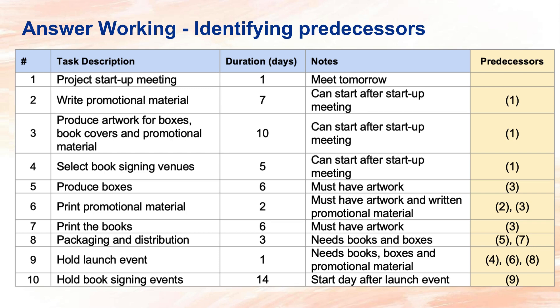The nodes basically explain what the predecessors are. In deciding predecessors for task 9, that is hold launch event, we need to use common sense to know that selecting the signing venue, which is task 4, is a predecessor, although the notes don't say so and only specify that tasks 6 and 8 are needed for the launch event. Just like we attempted questions in the previous video lessons, let's start drawing the CPA nodes and activities first without any concern for the durations such as ESTs and LFTs.